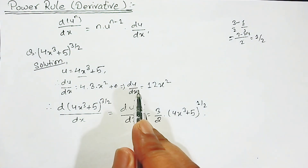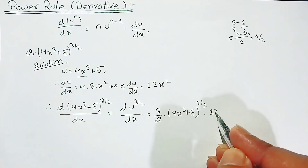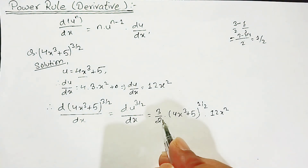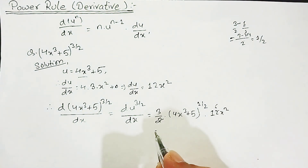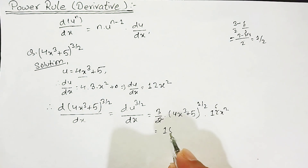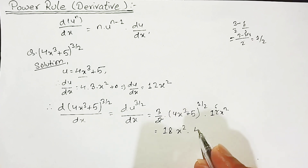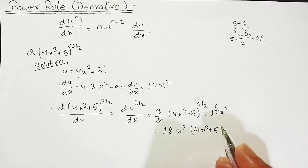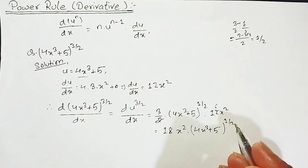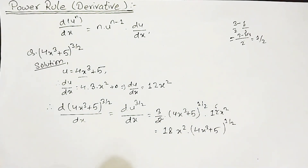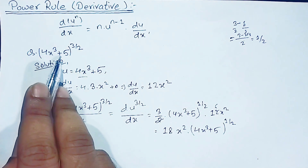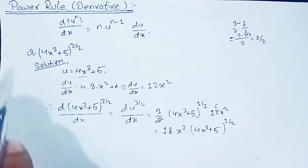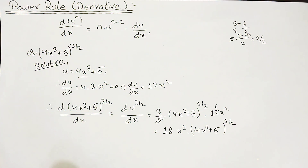We now multiply by du upon dx, which is 12x². Combining the coefficients: 3/2 times 12 gives 18. So the final answer is 18x² times (4x³ + 5) to the power 1/2. This is our final answer for the derivative of (4x³ + 5)^(3/2) using the power rule.